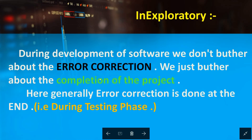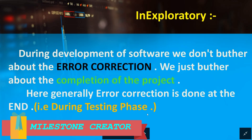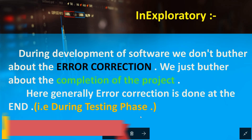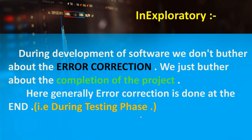In the exploratory method, error correction is generally done at the end, that is during the testing phase. This means when we are building software, if there is any kind of error, we do not give it importance. Our main focus is to complete the software first, then we check where the errors are and rectify them.